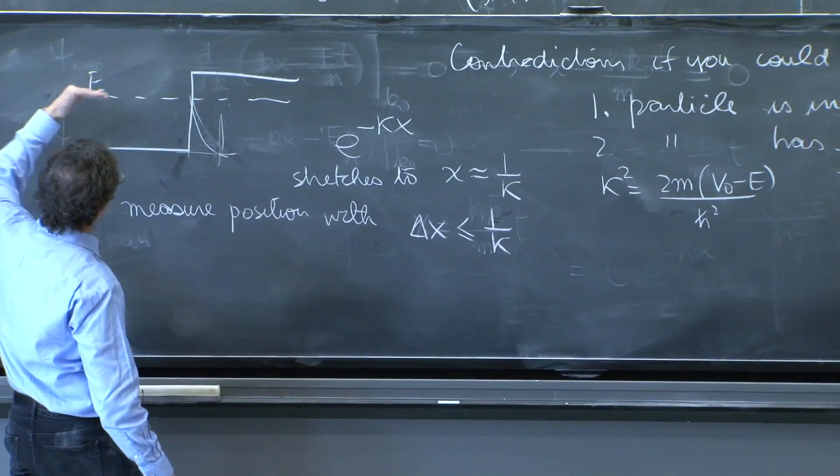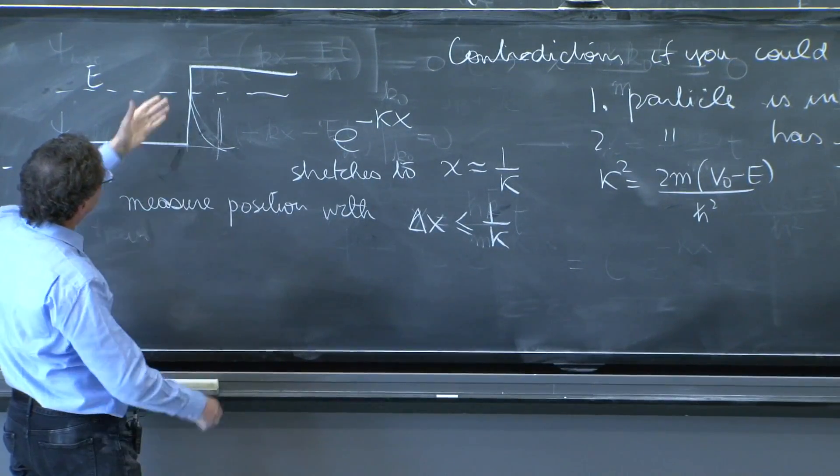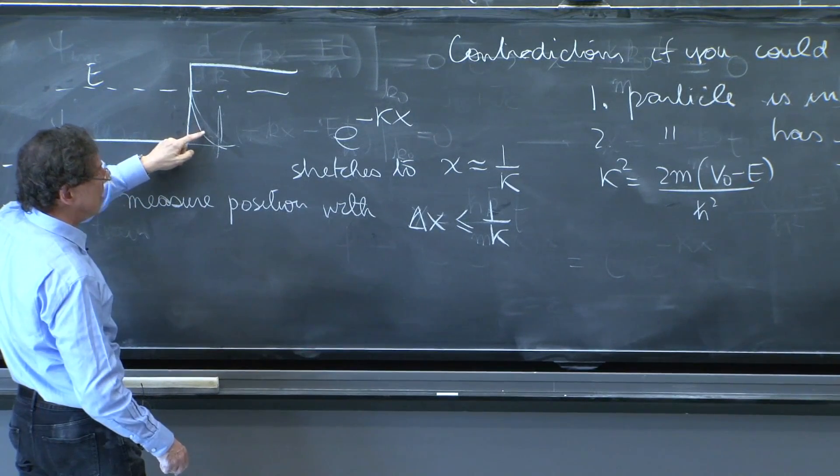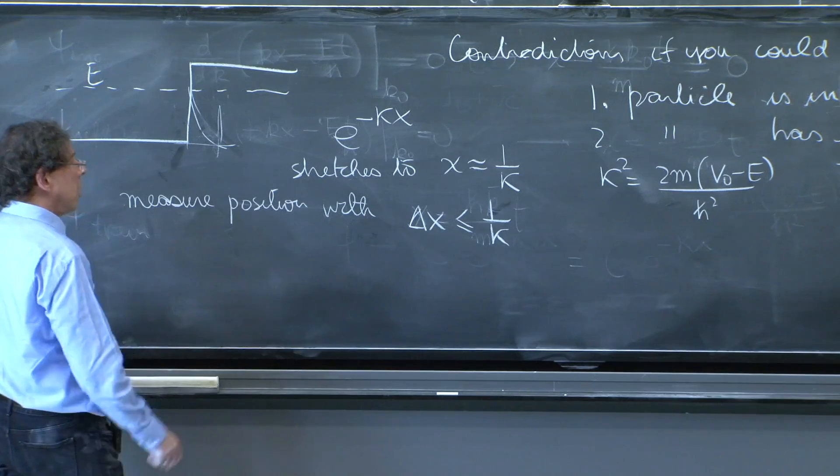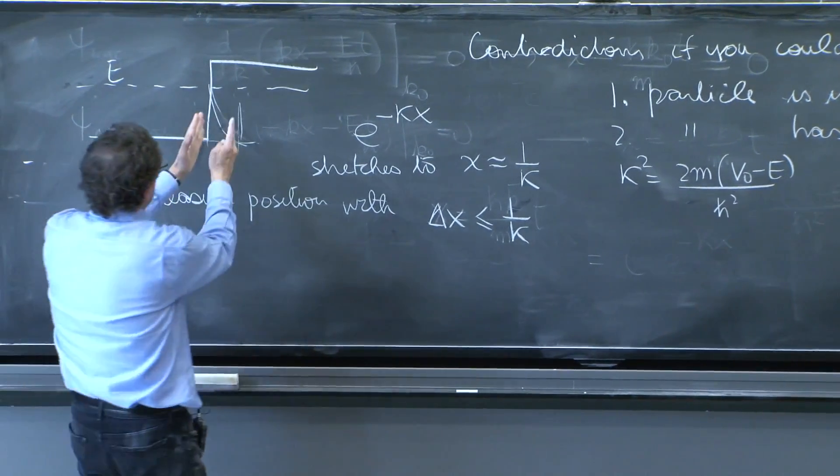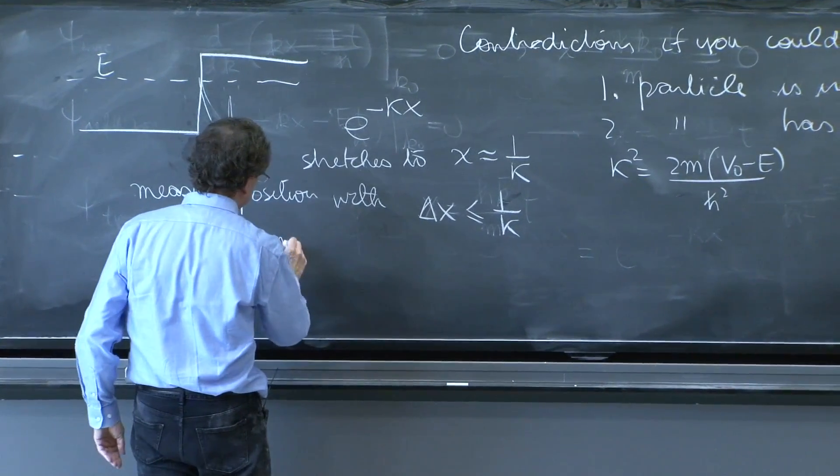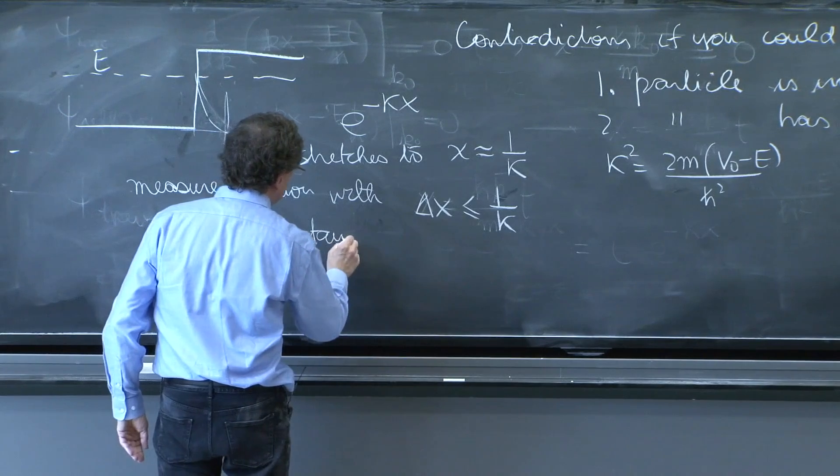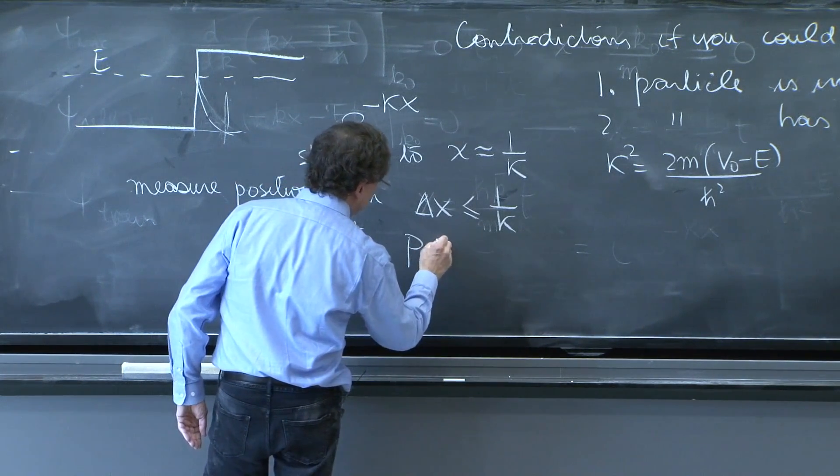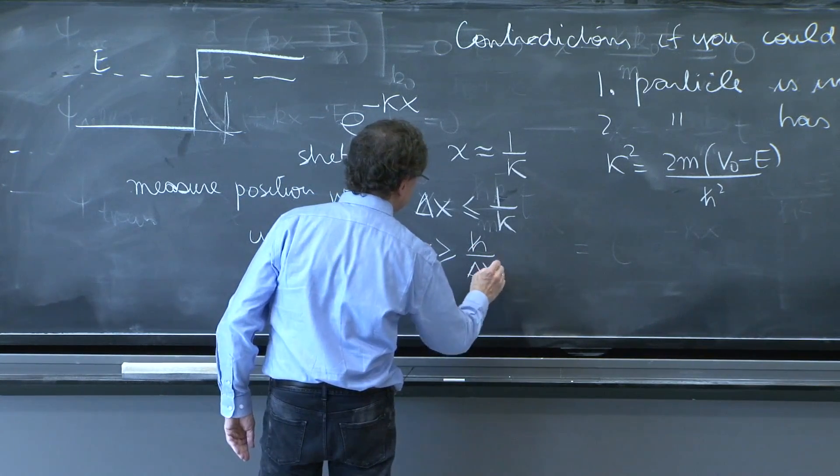It's a different kind of wave function—there's no well-defined momentum associated with it. So because you localize in x whatever wave function you have, you're going to have some momentum uncertainty that is bigger than ℏ/Δx.